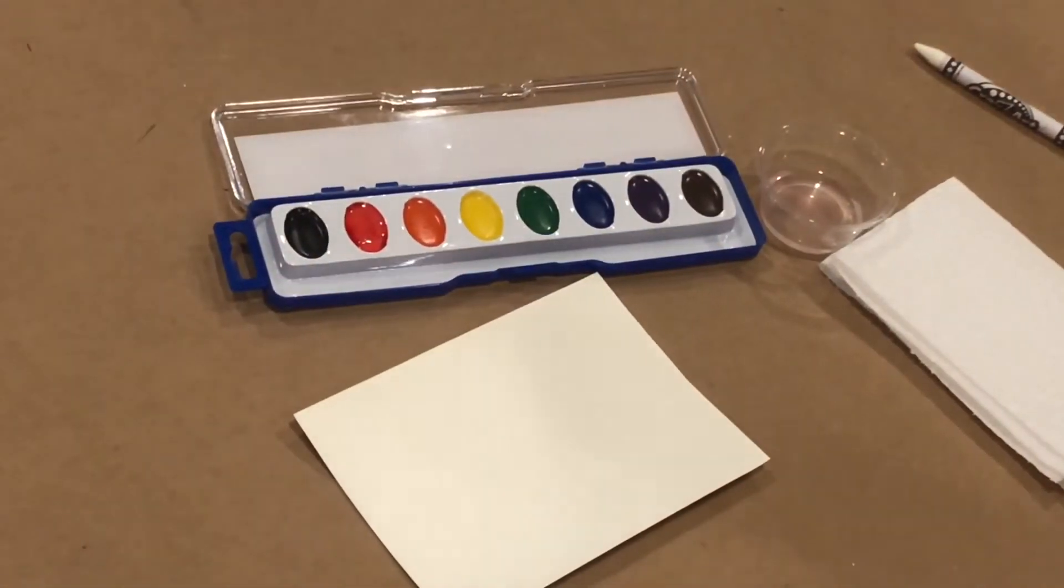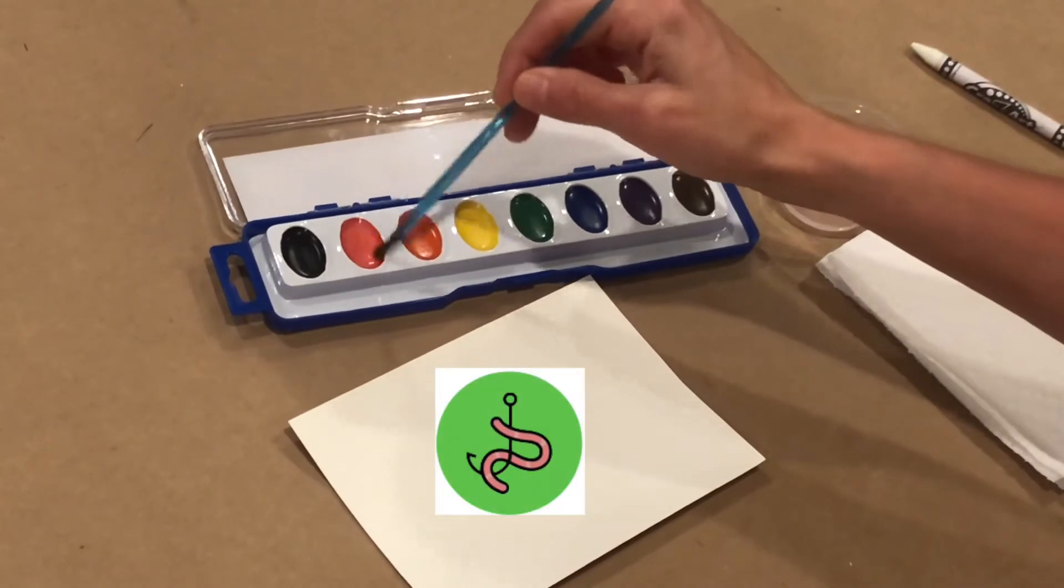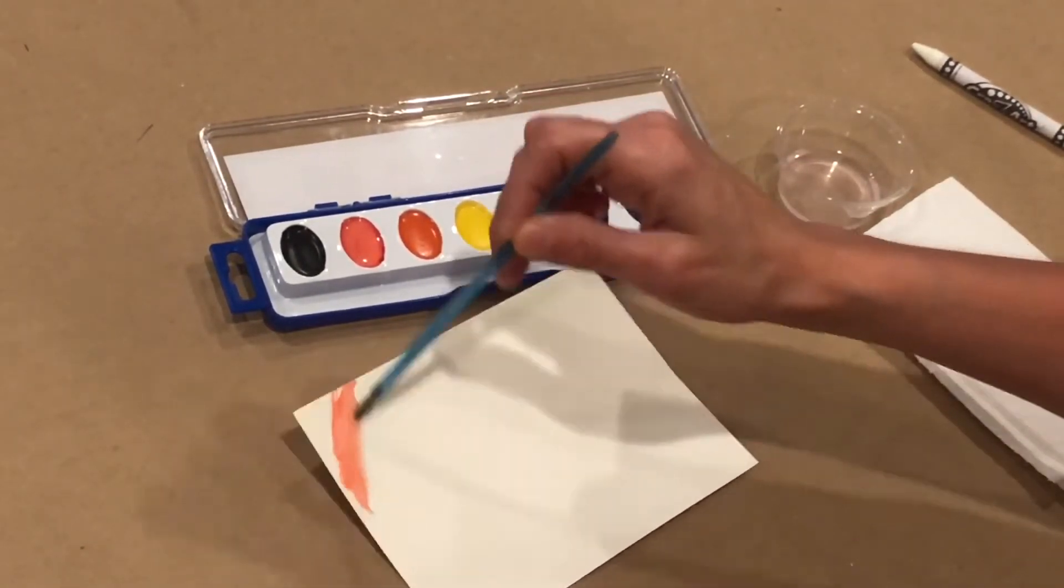The next step is to open your paints and wet the brush in a little water. Then find a color you'd like to start with and lightly brush the paint over your design.